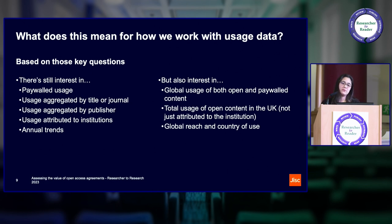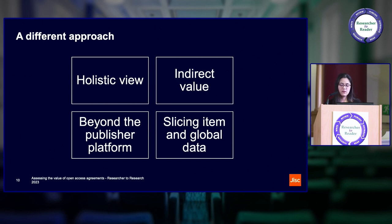What does all this mean for how we work with usage data? When I look at these questions, I can see there's still a lot of interest in per-title usage, usage aggregated by title or journal, usage aggregated at the publisher level, usage attributed to institutions, and annual trends. But I can also see there's a lot of interest in global usage of both open and payable content, total usage of content in the UK — not just that attributed to UK institutions — and the global reach and country of use.